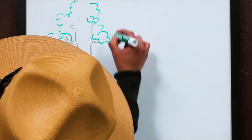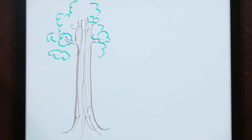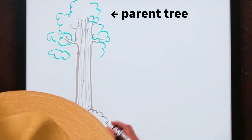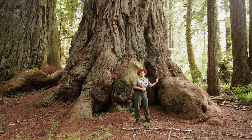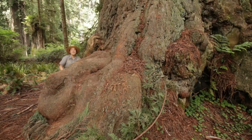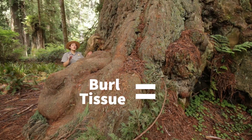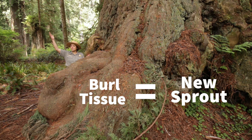Redwoods have a unique adaptation that allows them to reproduce in a different way. Redwood trees have the capability to clone themselves, which basically means that this tree — the parent tree — can replicate itself from suppressed or unsprouted burl tissue and form a clone when it's under some sort of stress. Take a look at the bulbous, knobby growth on this Redwood tree here. We refer to this as a burl or burl tissue.